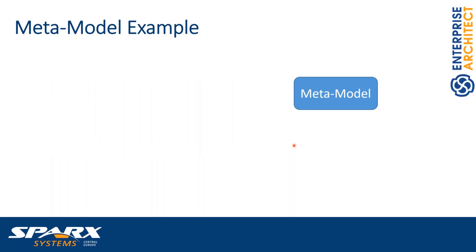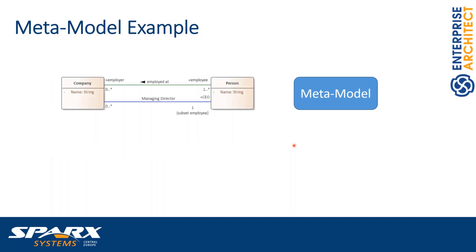Let's consider an example. This is a simple UML class diagram. We have a class Company, we have a class Person. A person can be employed at a company — the company plays the role of the employer. The employer person can be employed at zero to infinite companies. Company has a name and at least one employee. There is also a second relation indicating who is the managing director, which is a subset of the set of employees.